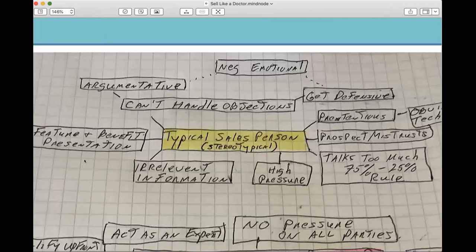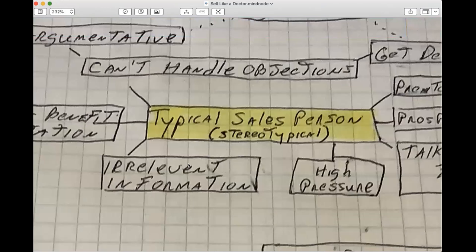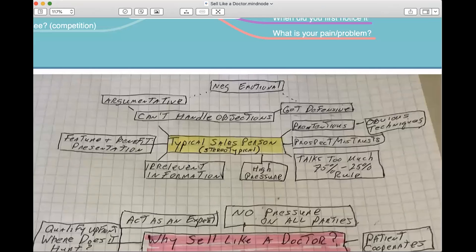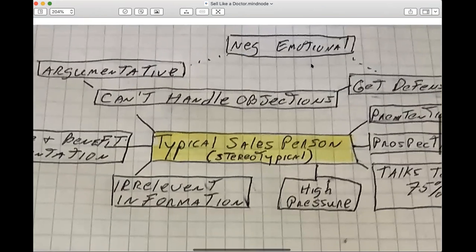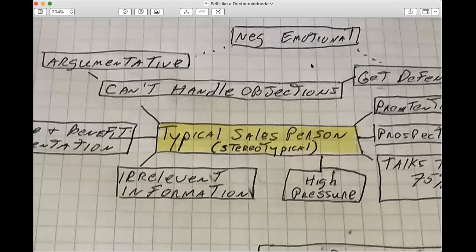They go right in there and go into all the features and benefits in their presentation. Do they ask any questions? Do they find out what's the real needs or pains or problems of the prospect? No. So they give that presentation with very little qualification. And then they go right into what we call tons of irrelevant information. They just give a lot of information to the prospect. They don't know if the prospect has a need or what their need is, what their pain or problem is, like a doctor would do. They just throw the kitchen sink literally at that prospect.